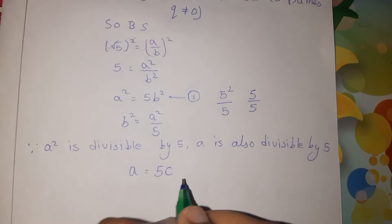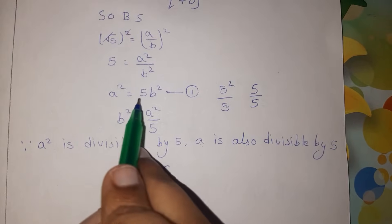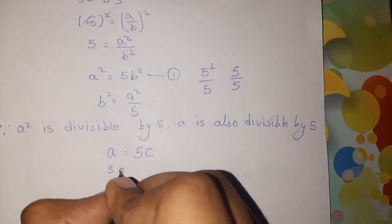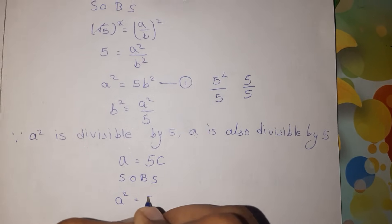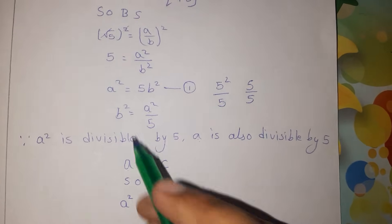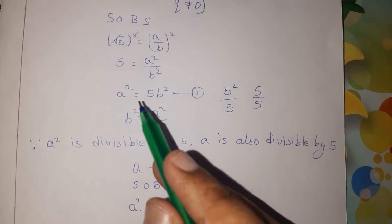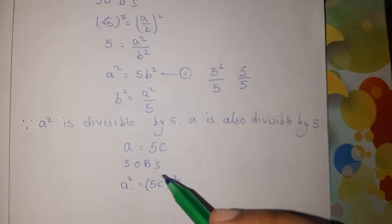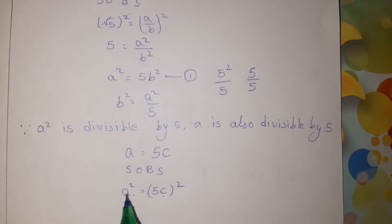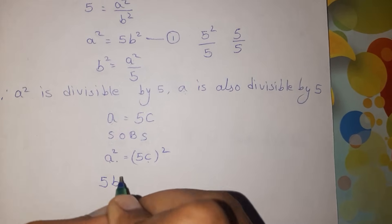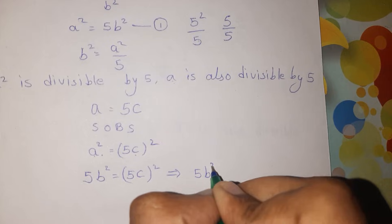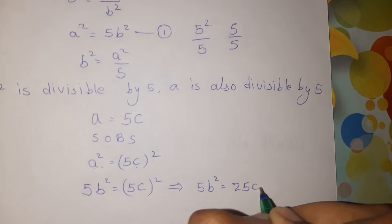Let a be equal to 5c. Then a square is equal to 5c whole square. Squaring on both sides, a square is equal to 25c square. Substituting into a square equals 5b square, we get 5b square is equal to 25c square.